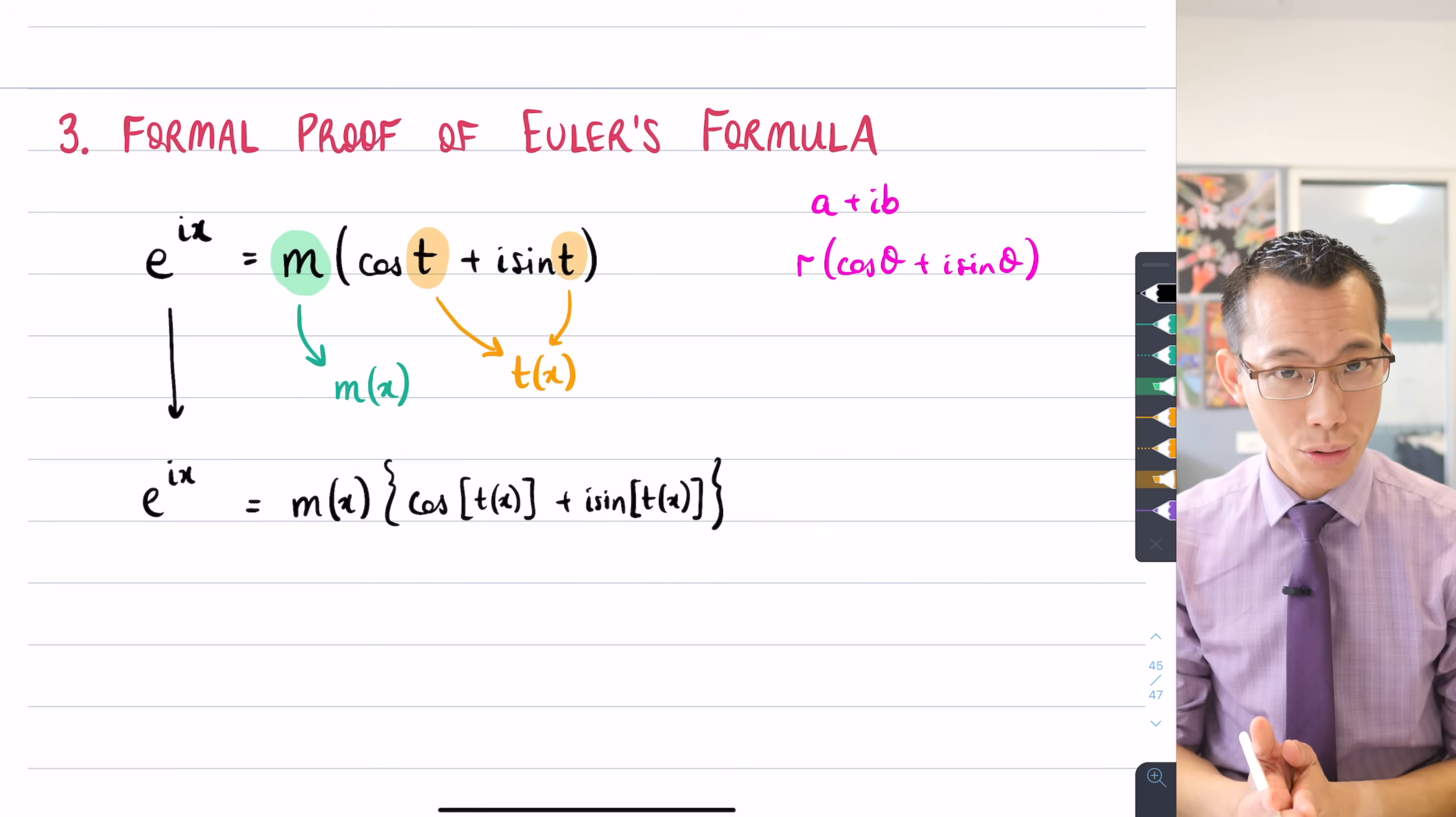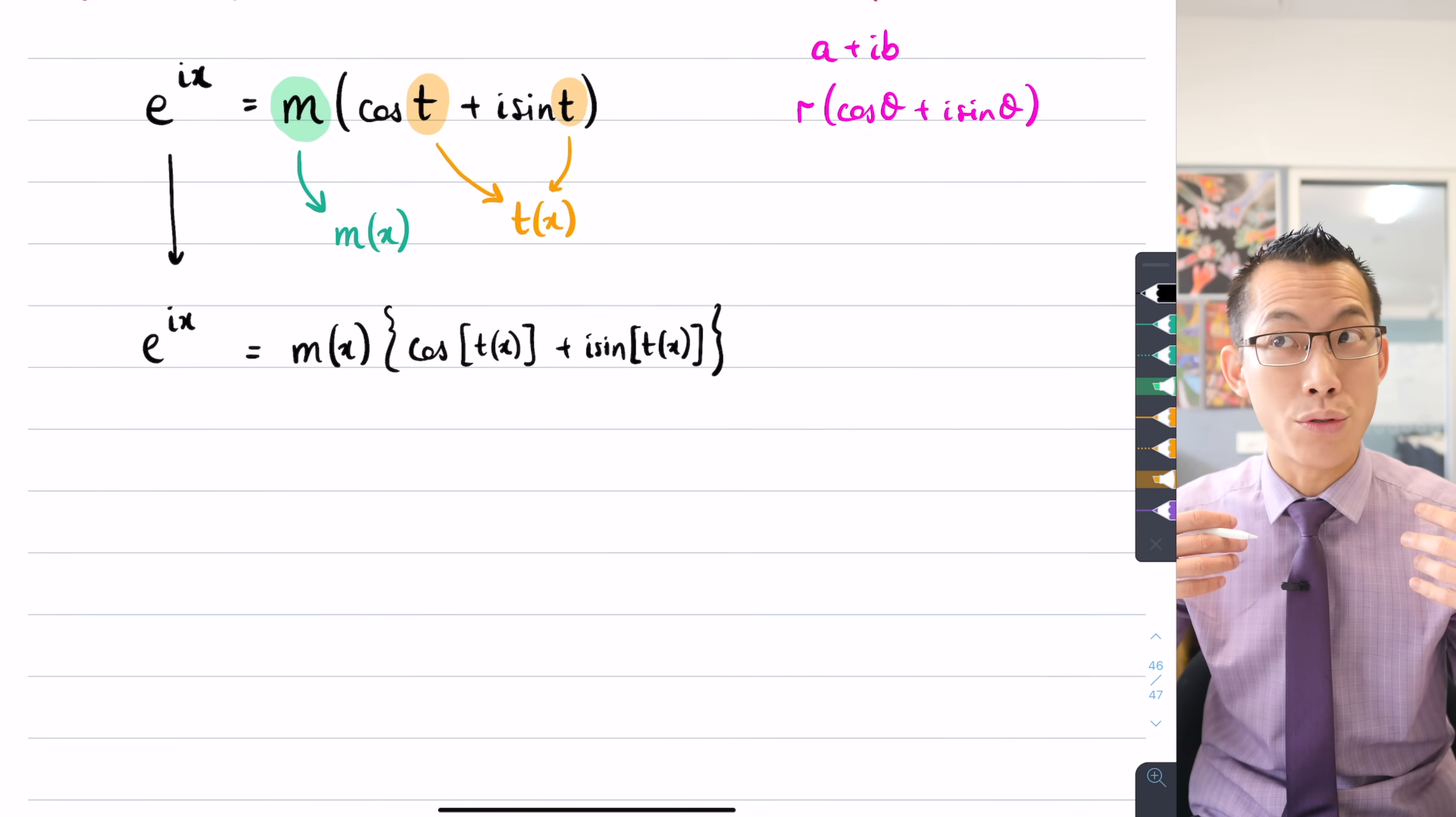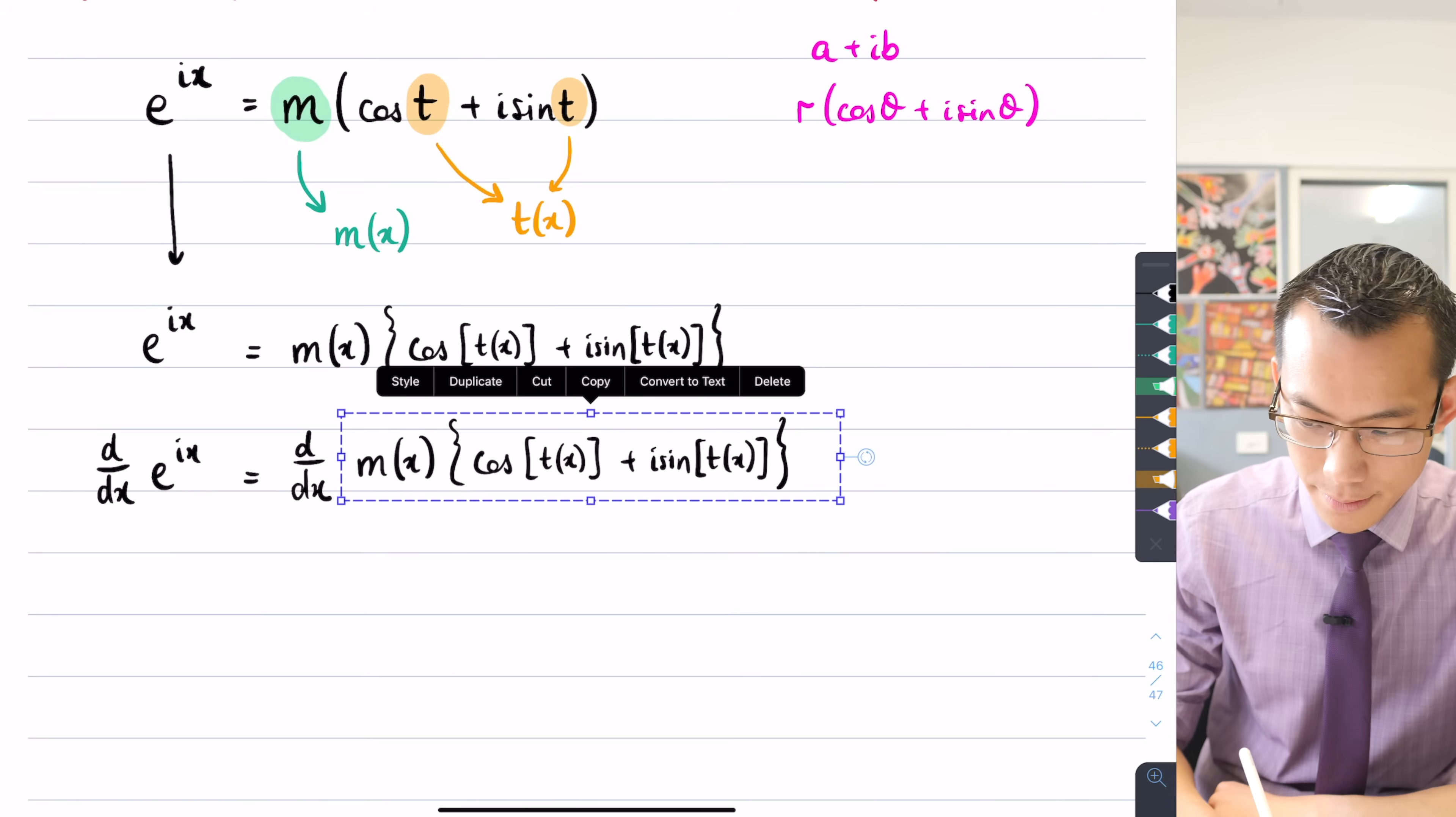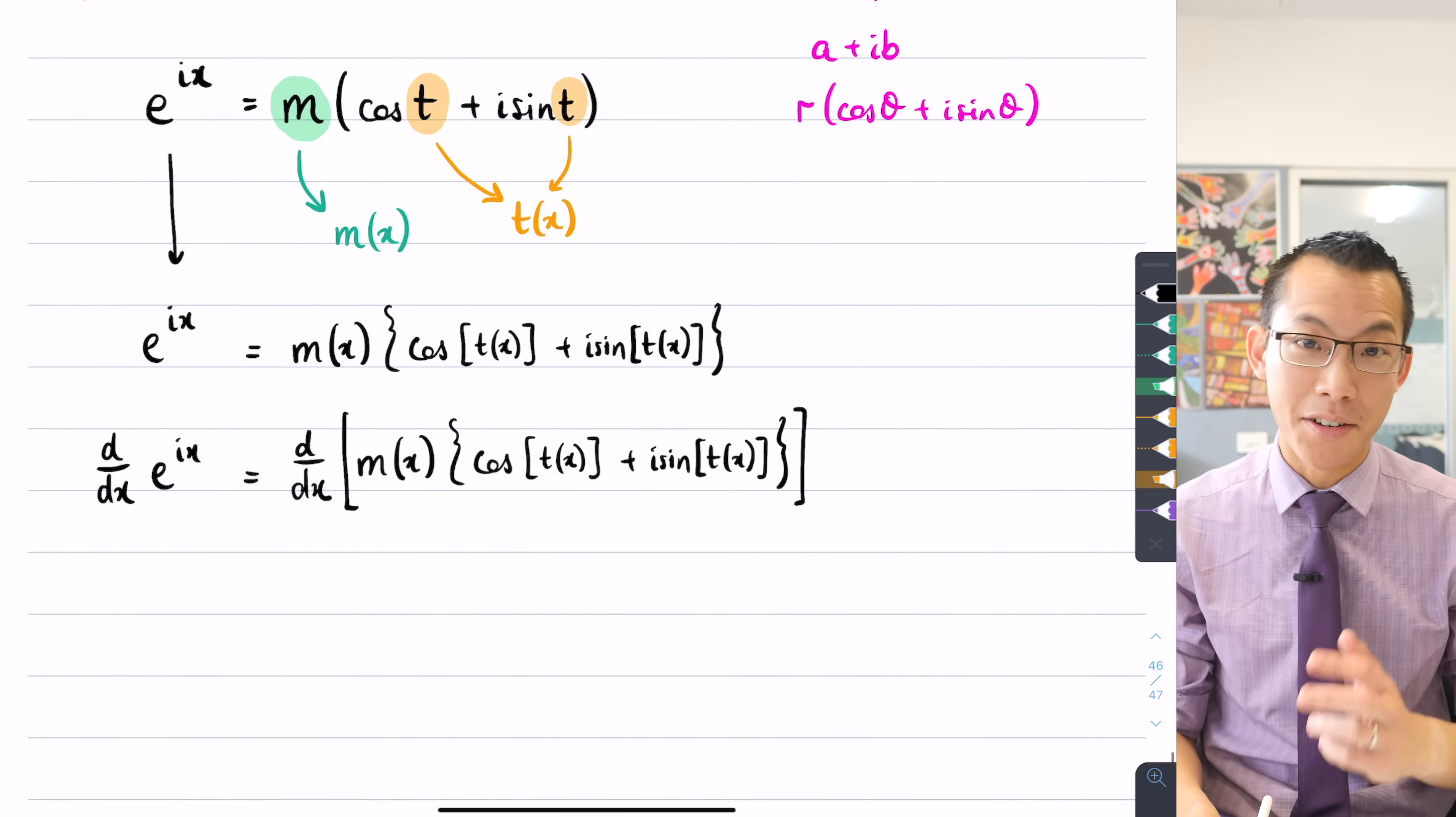Now, I'm going to employ the same tool that I used before with my informal proof with the rectangular form, and that is calculus. So what I'm going to do is I'm going to take this awkward line, I'm going to take the left-hand side and right-hand side, I'm going to differentiate both of them. So let's have a go at that. The derivative of e to the ix equals the derivative of this entire thing here.